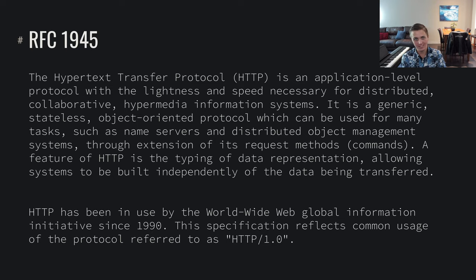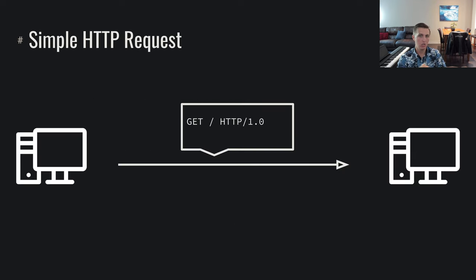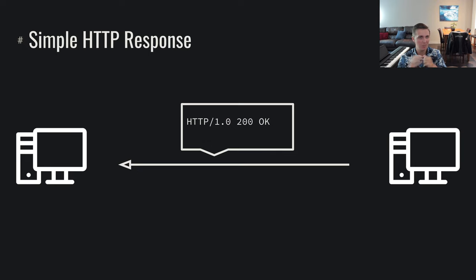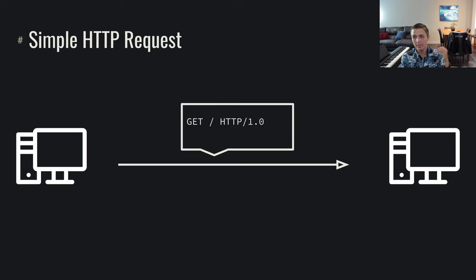So let's look at what this HTTP protocol looks like exactly. A simple HTTP request looks something like this. We send out some data over the internet — we have the ability to transmit data to a remote system. We have this application-layer protocol HTTP, and we want to send a message — in this case GET slash HTTP 1.0. The server replies HTTP 1.0 200 OK. So what is the structure of this request? What does it mean?